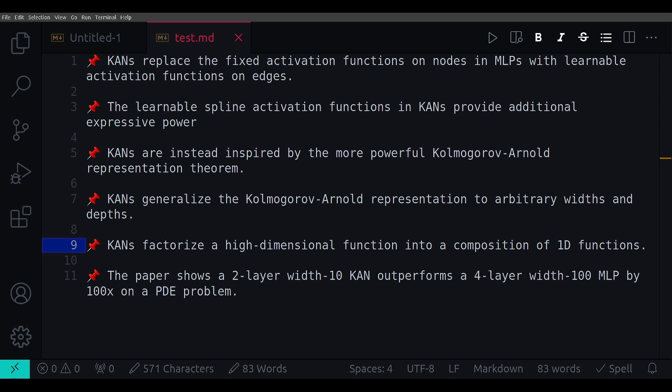The high expressivity of individual activations in CANs means the network can learn meaningful representations and achieve high accuracy with smaller architectures compared to MLPs. For example, the paper shows a two-layer width 10 CAN outperforms a four-layer width 100 MLP by 100X on a partial differential equation problem.